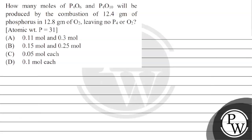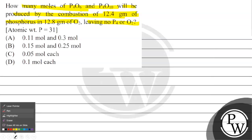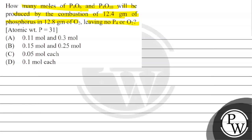Hello. Let's read this question. The question says: how many moles of P4O6 and P4O10 will be produced by the combustion of 12.4 grams of phosphorus in 12.8 grams of oxygen, leaving no phosphorus or oxygen? Atomic weight of phosphorus is given as 31. Option A is 0.11 mol and 0.3 mol. Option B is 0.15 mol and 0.25 mol. Option C is 0.05 mol each and Option D is 0.1 mol each.